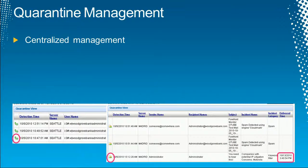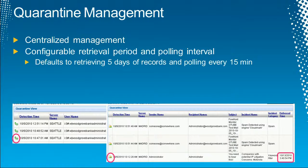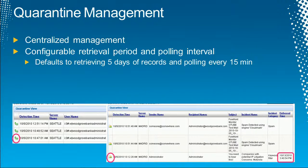Now we'll talk about the centralized quarantine. It has a configurable retrieval polling interval to pull information from remote servers. It defaults to five days retention and polls every 15 minutes.